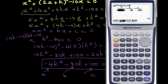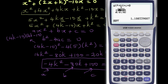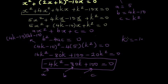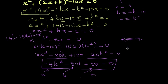Entering negative 4, negative 80, and 100 into the polynomial solver and solving it, the two values of k which give a tangent are: k equals positive 1.1803, or k equals minus 21.1803.